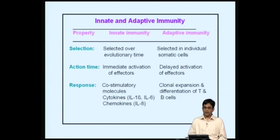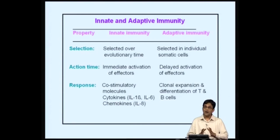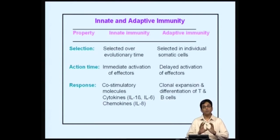The adaptive immune response results in clonal expansion and differentiation of T cells and B cells, whereas the innate immune response produces cytokines, co-stimulatory molecules, and chemokines. These are important in limiting the pathogen, alerting the body that it is under attack, and modulating the adaptive immune response — and how this occurs is something we will explore during this lecture.